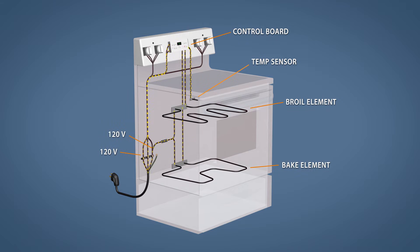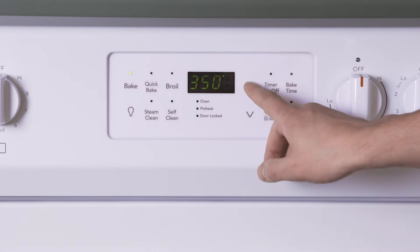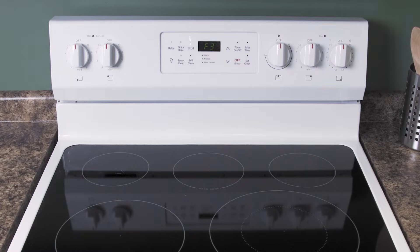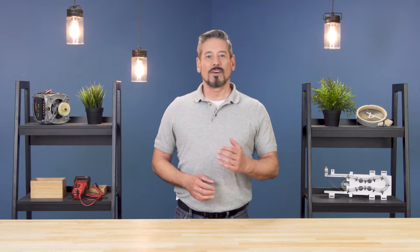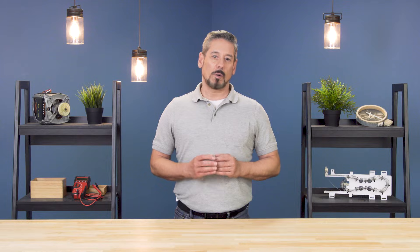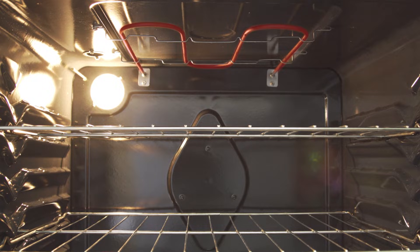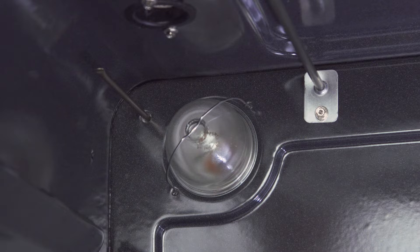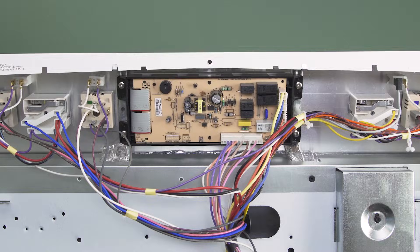Hi, I'm Vance and welcome to Repair and Replace. The control board is the brains of the oven. It regulates power, displays the time and temperature settings, and will show an error code if something goes wrong. Error codes can be divided into four general categories: temperature codes, sensor codes, codes for the door, and codes for the control board itself.